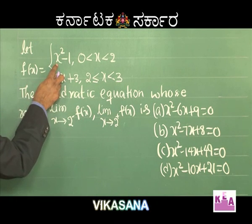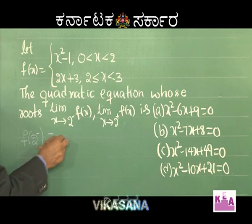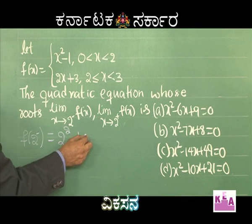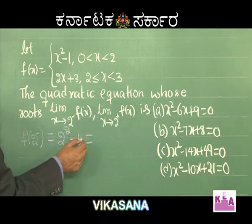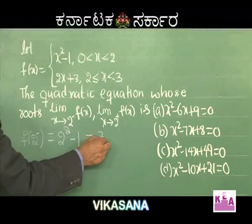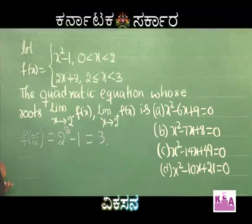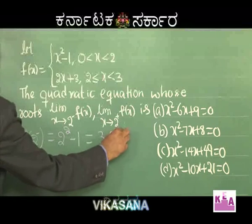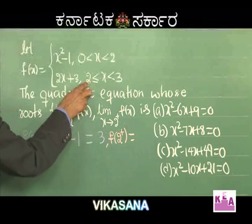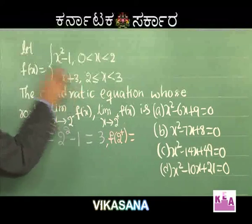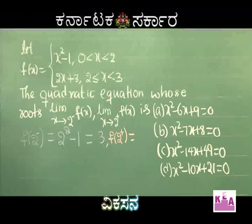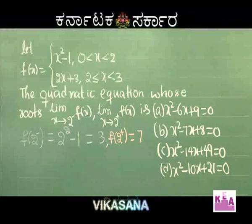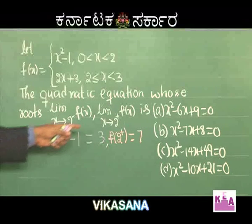For the left-hand limit: f(2⁻) = 2² - 1 = 4 - 1 = 3. For the right-hand limit: f(2⁺) = 2(2) + 3 = 4 + 3 = 7. So let alpha = 3 and beta = 7.